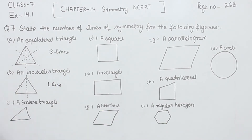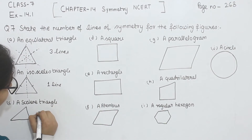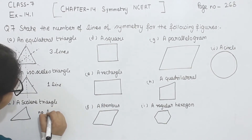Now, comes to the scalene triangle. As you see, we have a scalene triangle where all the sides are different — no side is equal to the other. So this will have no line of symmetry.